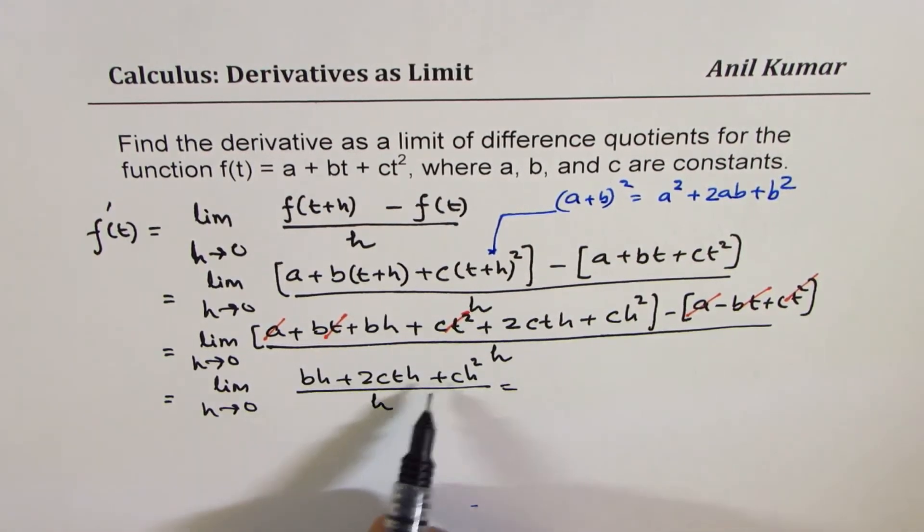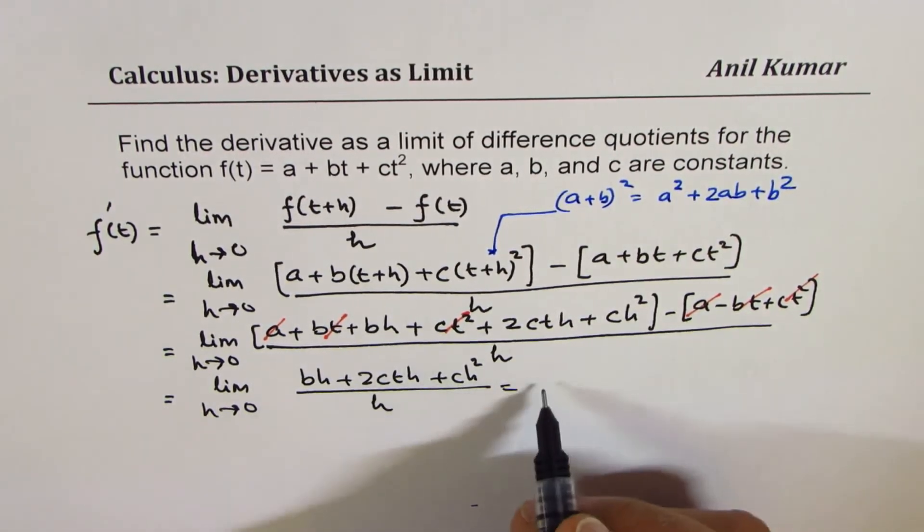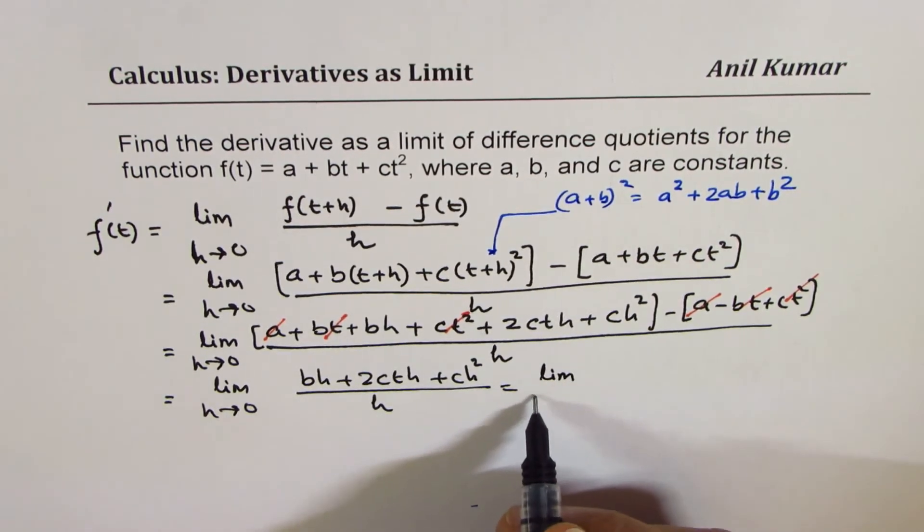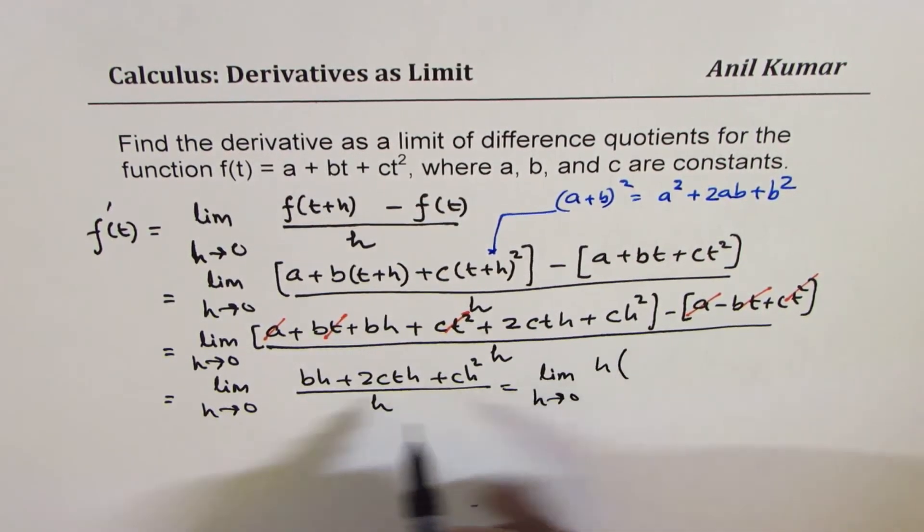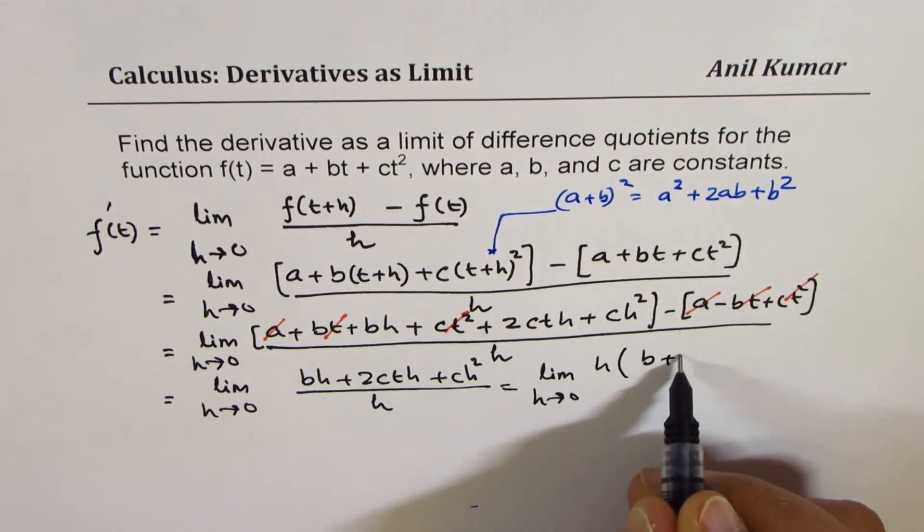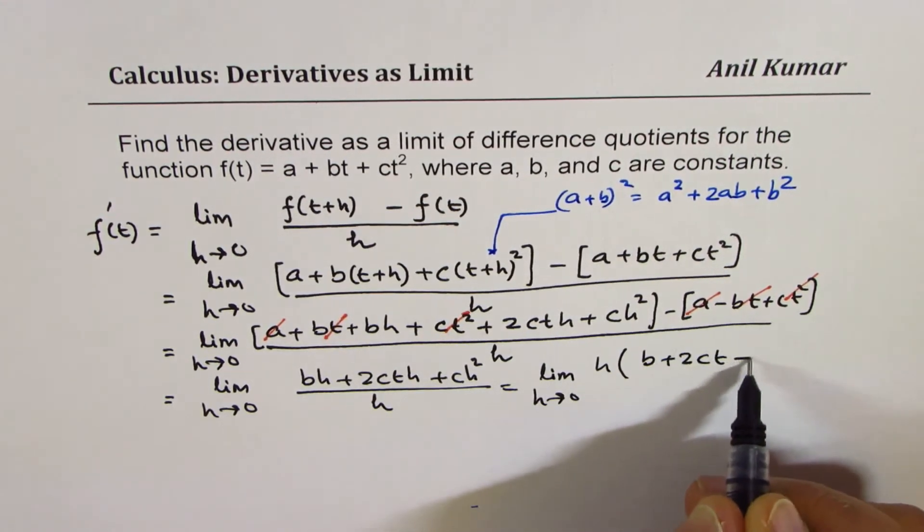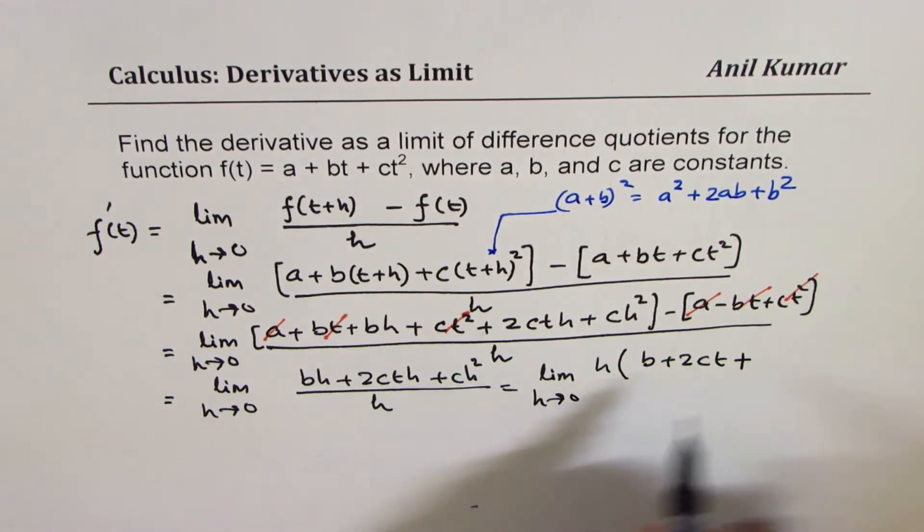As expected, we have h common in the numerator. We could write this as limit h approaches 0, h times b plus 2ct plus ch divided by h. The common factors, h and h can cancel.